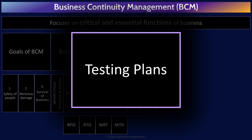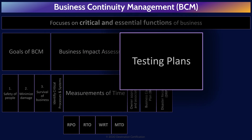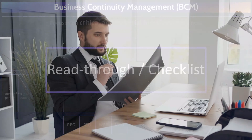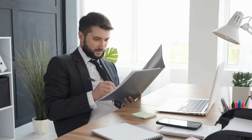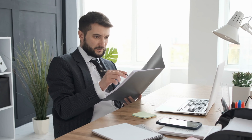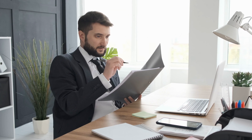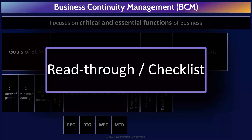It is incredibly important that BCP and DRP plans are tested periodically. There is little likelihood that the plans will work effectively in a real disaster if they haven't been tested and refined based on the results of testing. Tests are typically done in order, starting with the first simplest test, refining based on that test, and then moving on to the next more comprehensive test. The first simplest test that can be done is a read-through or checklist. This is where the author of the plan reads through it to make sure they haven't missed anything. A plan should include the phone numbers for everyone in it, alternate contact info, etc.